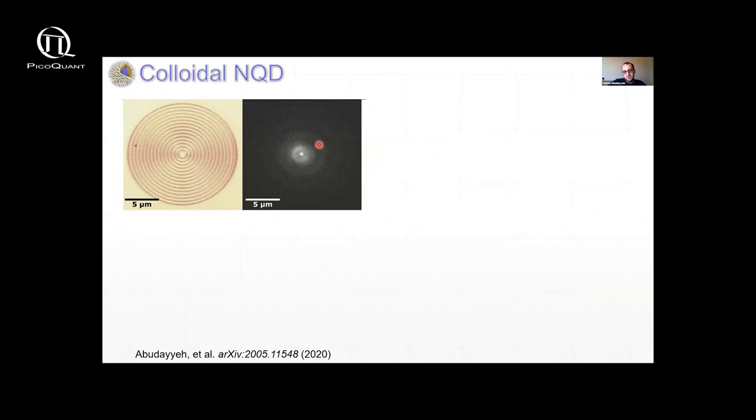And on the right here, you see a fluorescence image in real space, how it looks like. And you can see actually that the emission is coming from the center of the bullseye. So we managed to put our quantum dot in the right place.